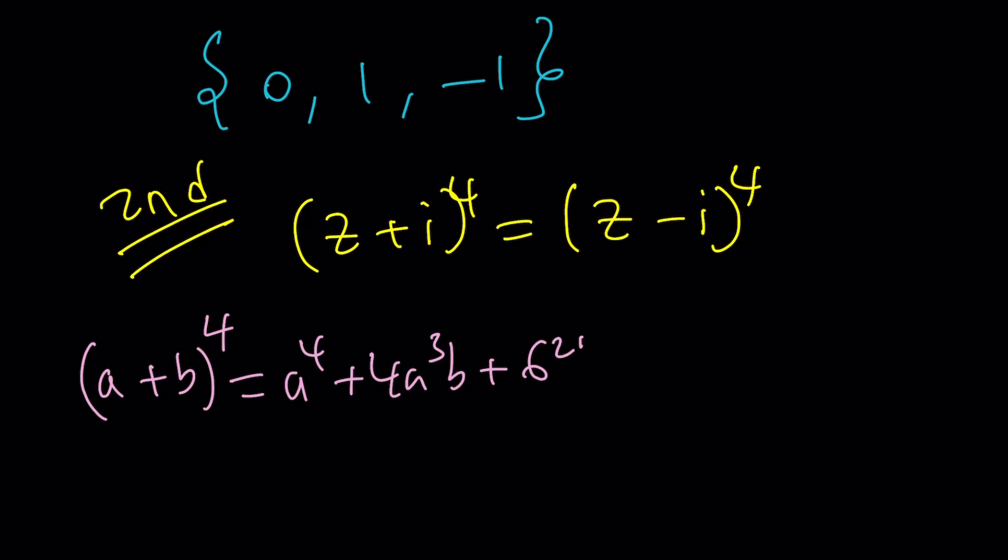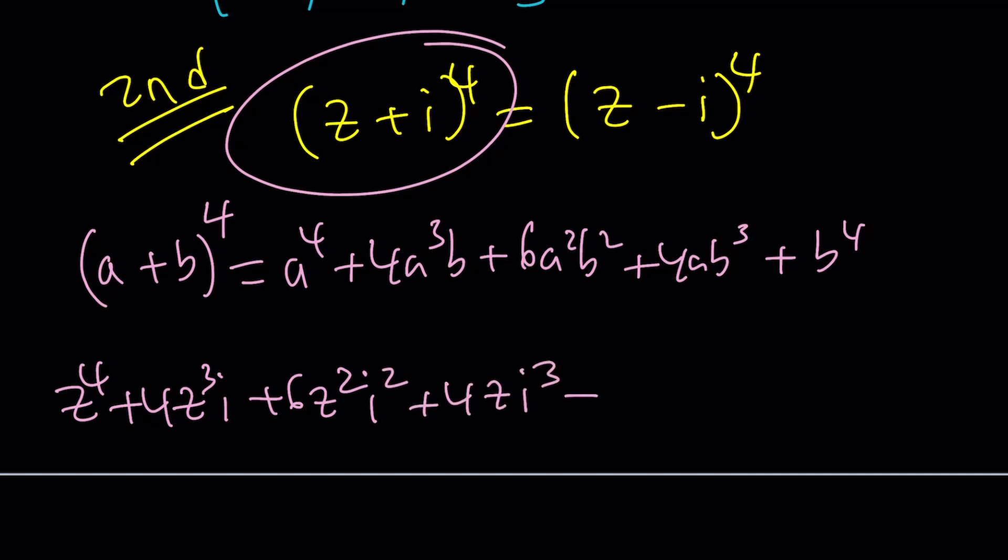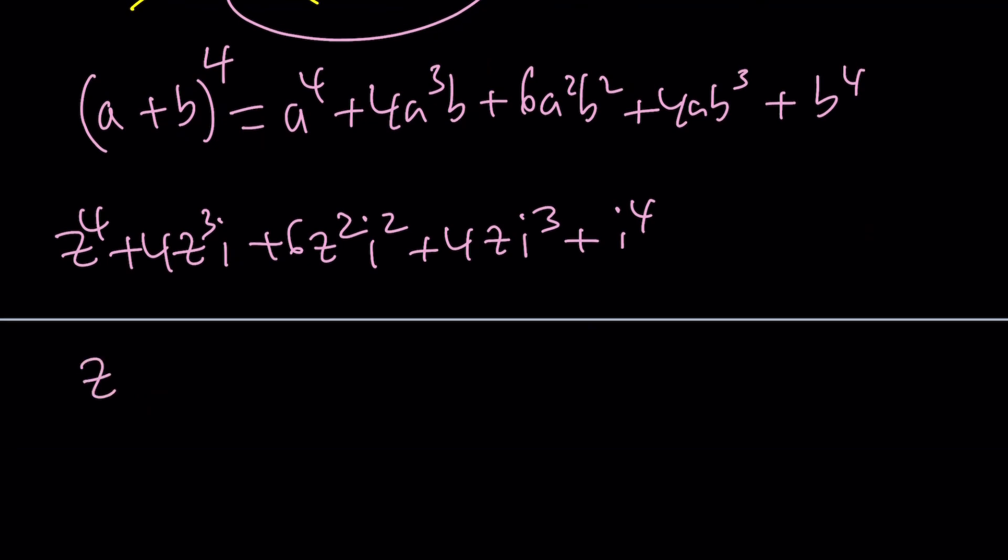We're going to get 6a squared b squared. And then from symmetry, 4ab cubed plus b to the fourth. If you apply it to both of these equations, you're going to get the following. We're going to get from here z to the fourth plus 4z cubed i plus 6z squared i squared plus 4zi cubed plus i to the fourth. And for the other one, we're going to get z to the fourth minus 4z cubed i plus 6z squared i squared minus 4zi cubed plus i to the fourth.